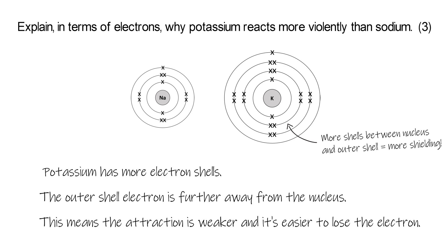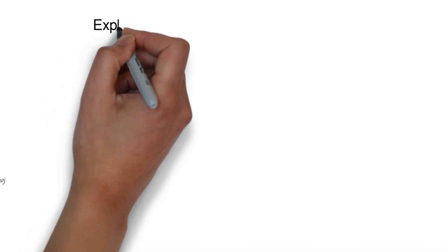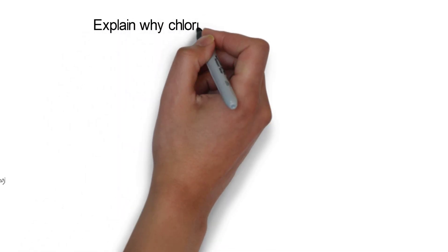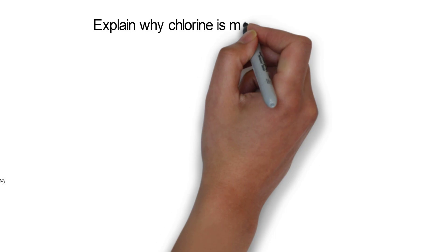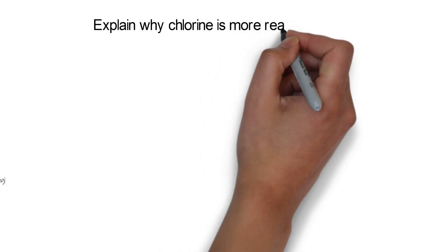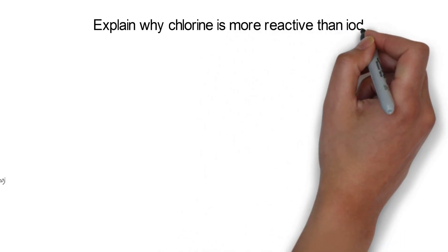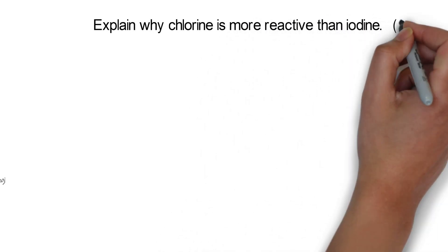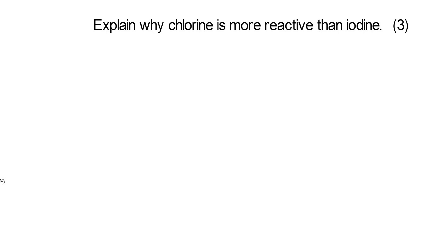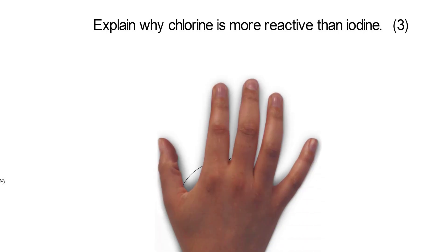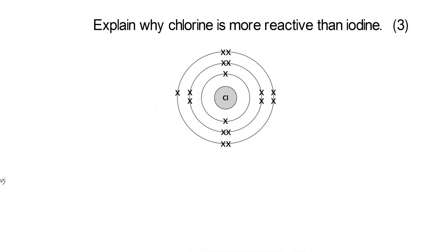So that's group 1. Let's have a look at group 7. For example, explaining why chlorine is more reactive than iodine. So this has two group 7 elements. Now group 7 elements have got seven electrons in their outer shell. They don't want to lose any — they just want to gain an extra one to get a full outer shell.